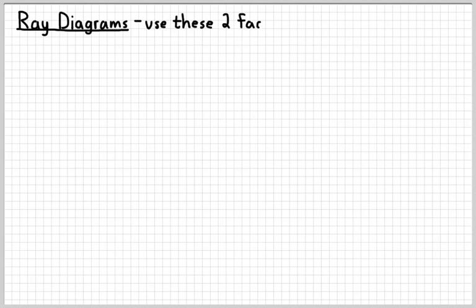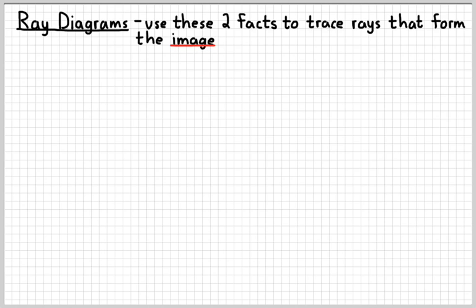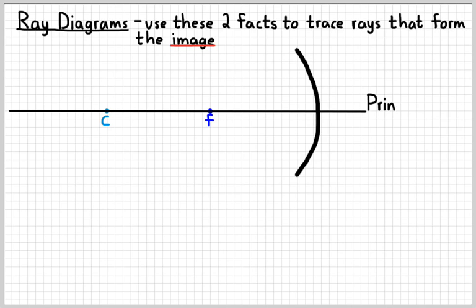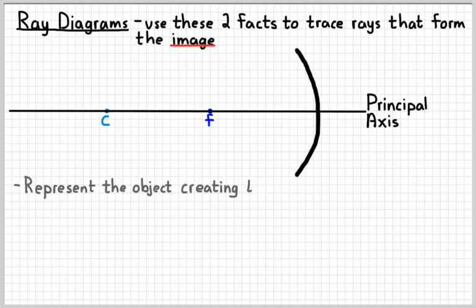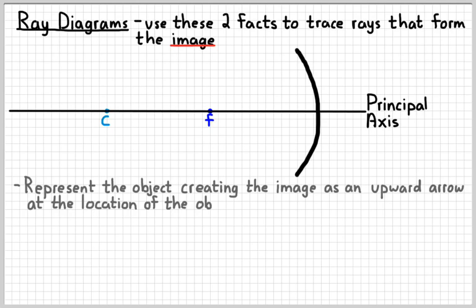We can draw what we call a ray diagram, where we use these facts to trace rays and figure out what an image is going to look like. Here's our mirror with the center and the focus. I draw a line through them called the principal axis, which is our baseline for looking at the mirror. Whatever object we're examining, we represent it as an upward arrow drawn at its location relative to the center and focal point — let's say about halfway between the center and the focus.